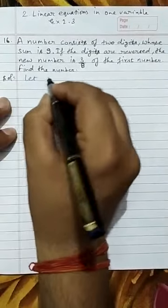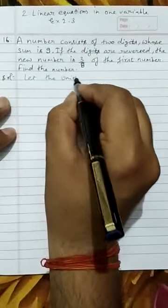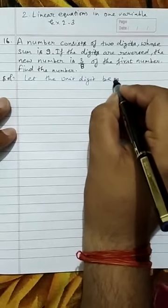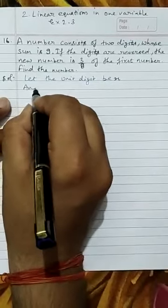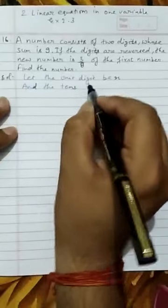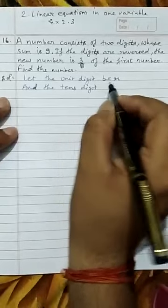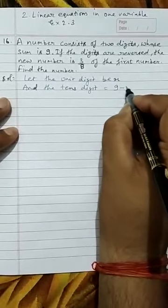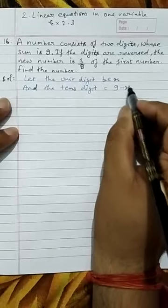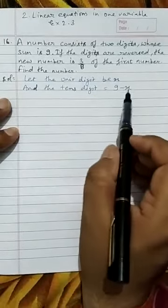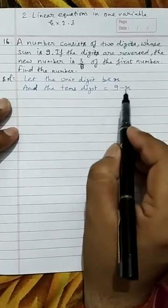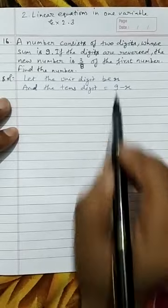Let the units digit be x, and the tens digit be 9 minus x. Because the sum of the digits is 9, when you add x and 9 minus x, the positive x and negative x cancel and you remain with 9.